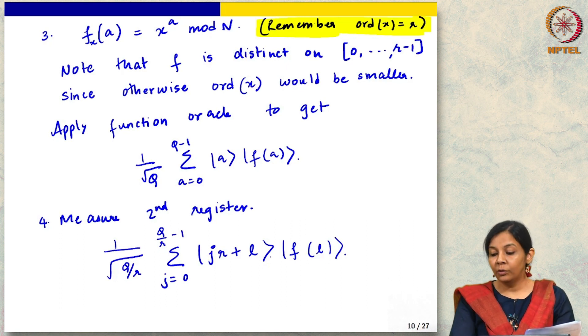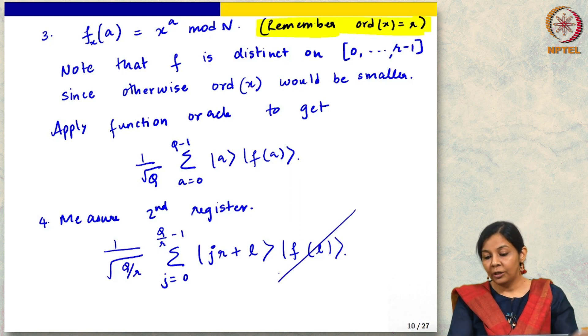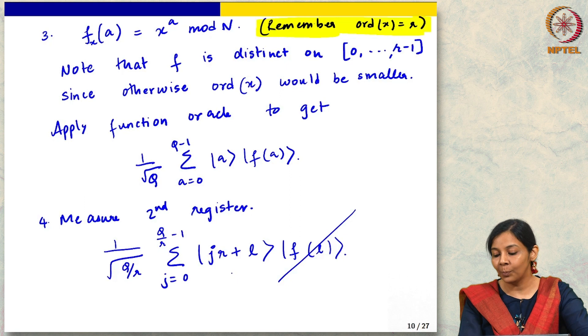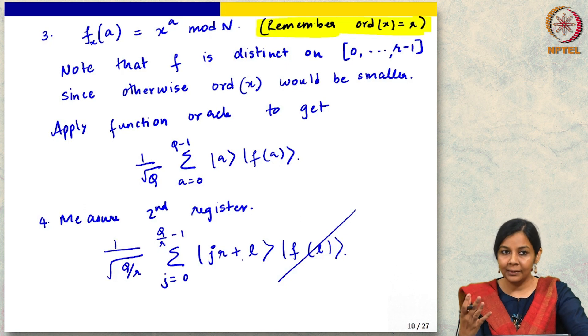Now in general, what do we do at this point? We just throw away the second register; we do not care about that anymore. Now can I measure? We cannot measure at this point because every time we measure we will get a different L, so we will not get anything consistent. Instead, what we will now do is apply the QFT.